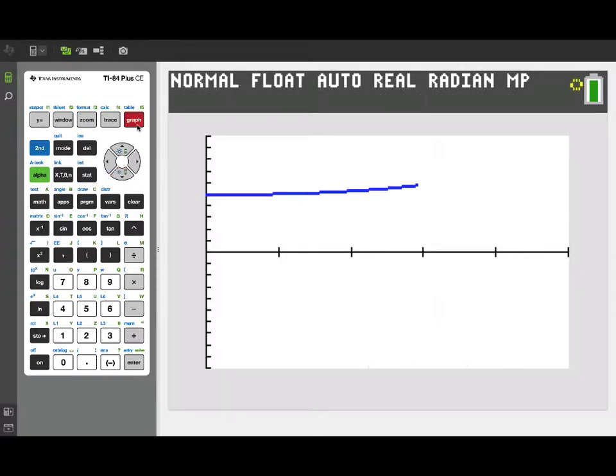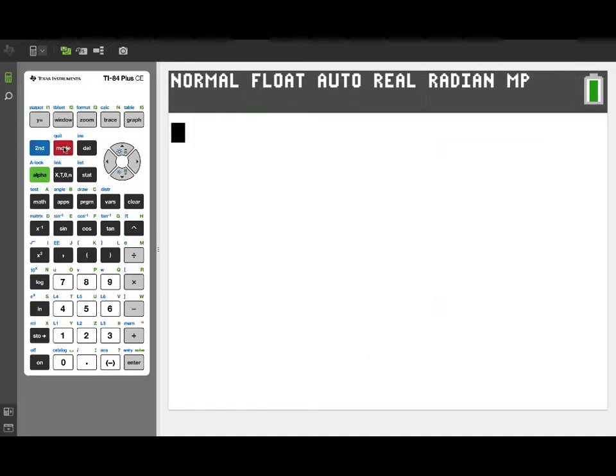So here's the graph. Now we're interested in finding the average value of these function values. To do that we're going to need to compute a definite integral and then divide by the length of the interval over which that integral is defined. So let's go to our calculation screen and take care of that. First of all let's take care of the division by the length of the interval.